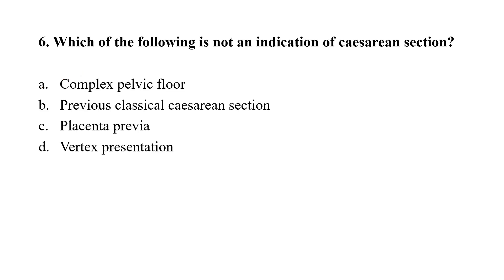Question number 6: Which of the following is not an indication for caesarean section? Option A: complex pelvic floor; option B: classical caesarean section pelvis; option C: placenta previa; option D: vertex presentation. The correct option is D — vertex presentation is not an indication for caesarean section.